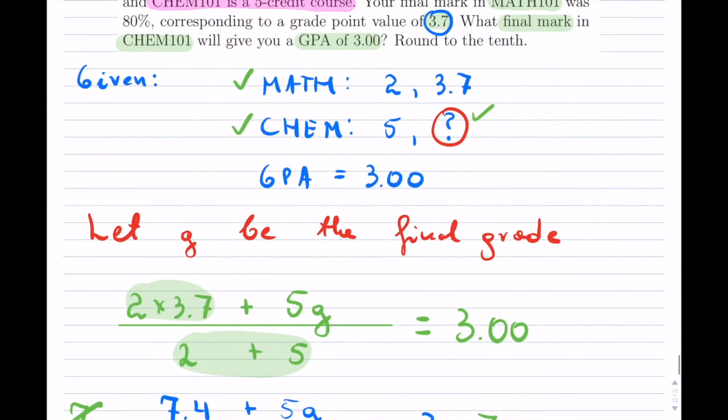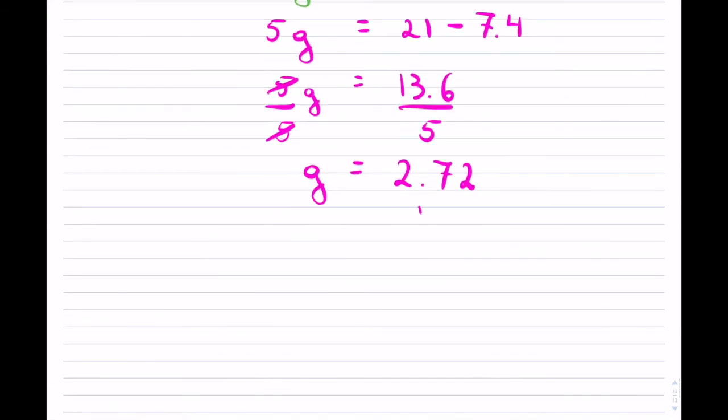And that gives me 2.72. Okay, I will have to round this probably to the, yep, to the 10th. Okay, because it's GPAs. And that will be a GPA of 2.7. And that's it.